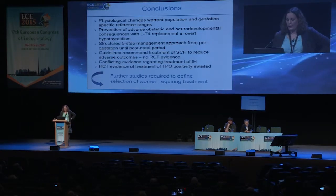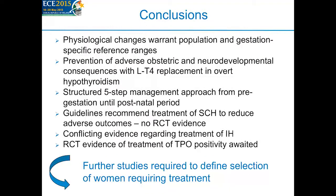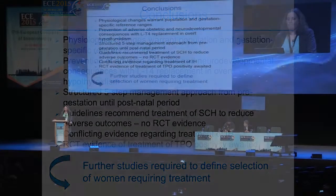In conclusion: we do need gestation- and population-specific reference ranges because of the physiological changes in pregnancy. Levothyroxine replacement in overt hypothyroidism can prevent obstetric and neurodevelopmental consequences, and I propose a structured approach to this. Guidelines recommend treatment of subclinical hypothyroidism although there is no RCT evidence. Management of isolated hypothyroxinemia remains conflicting, and we are awaiting exciting results on how to manage TPO antibody positive euthyroid women. We need further study to define how we select women that require treatment during pregnancy. Thank you very much.